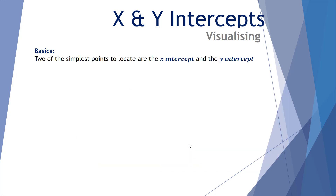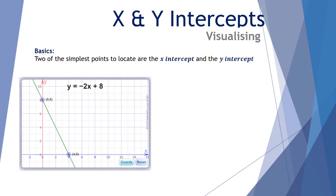Two of the simplest points you can locate are the x and y-intercepts. These leave very little room to make a mistake on your sketching. So in this set of axes, I have a point (4, 0) on the x-axis — we call that the x-intercept — and a point (0, 8) on the y-axis — we call that the y-intercept.